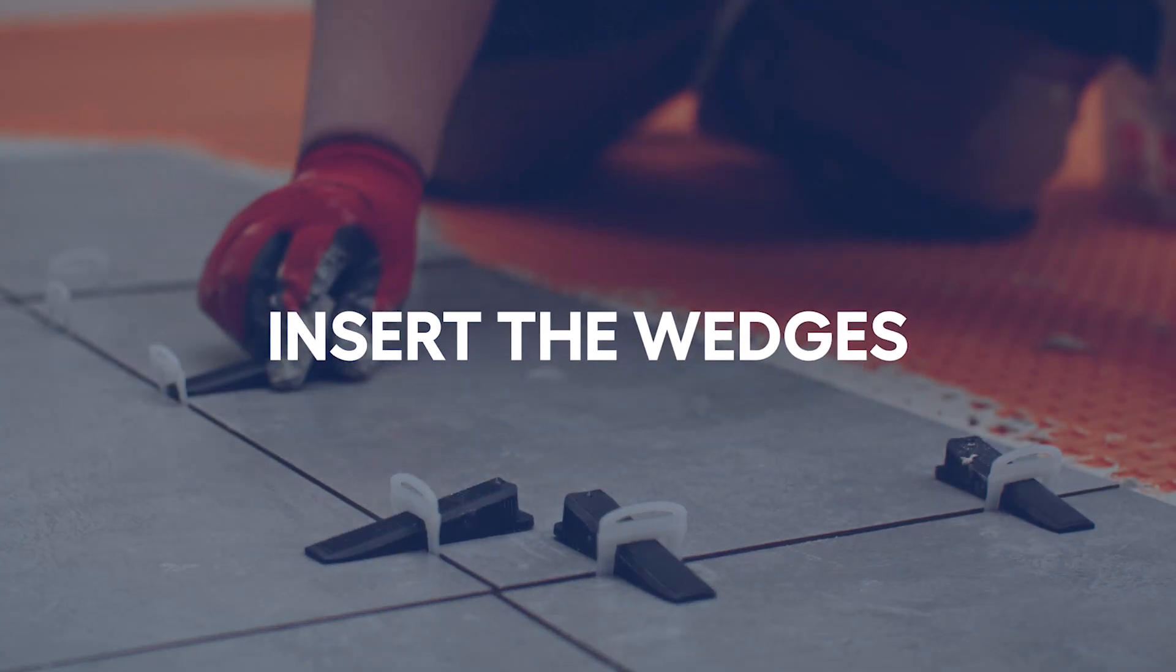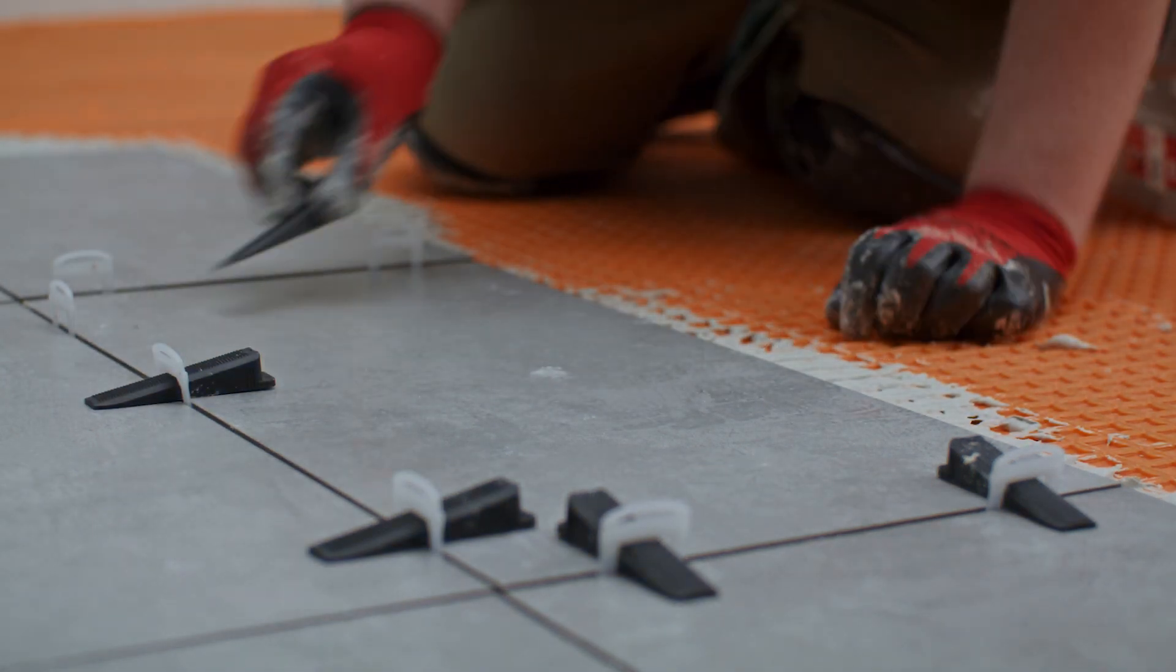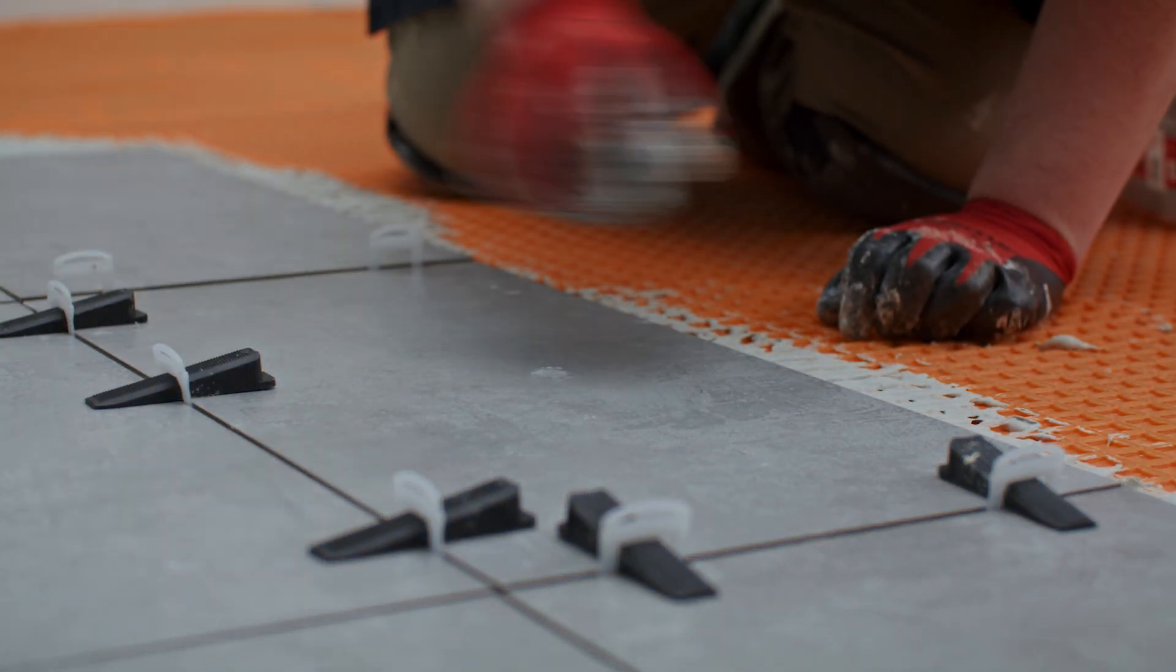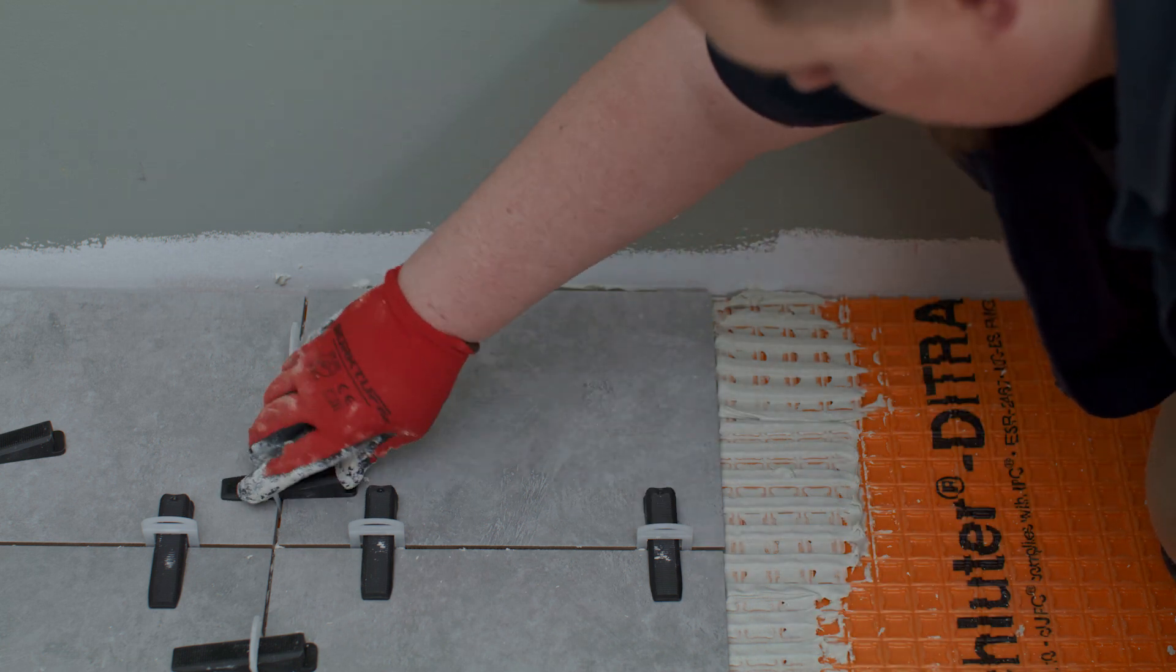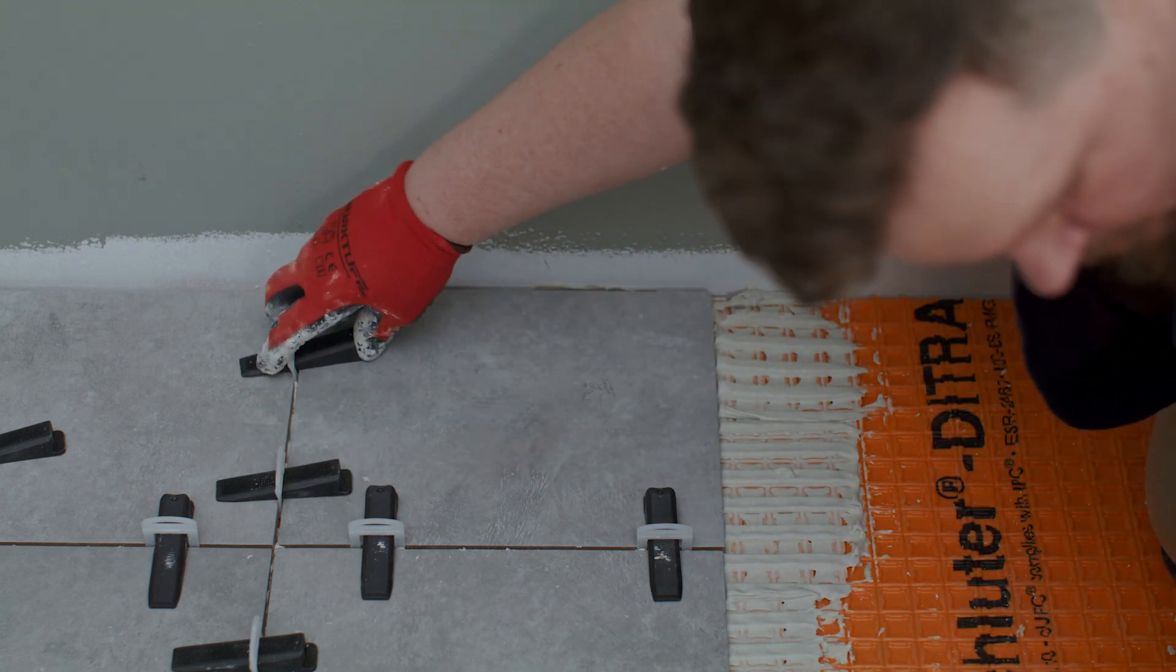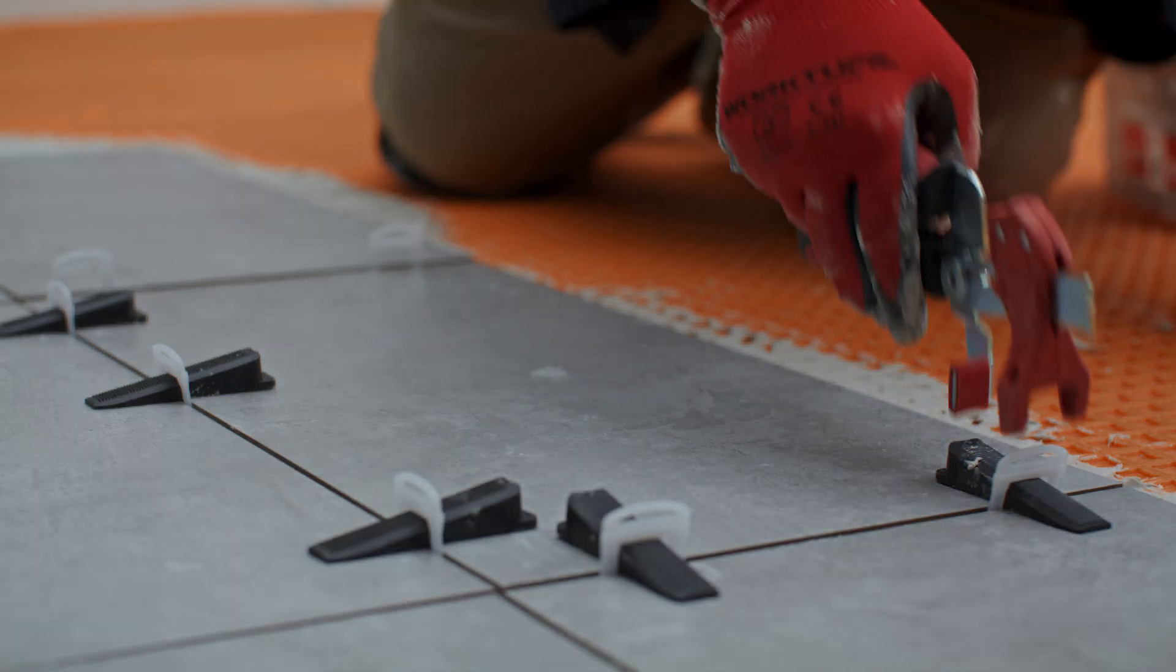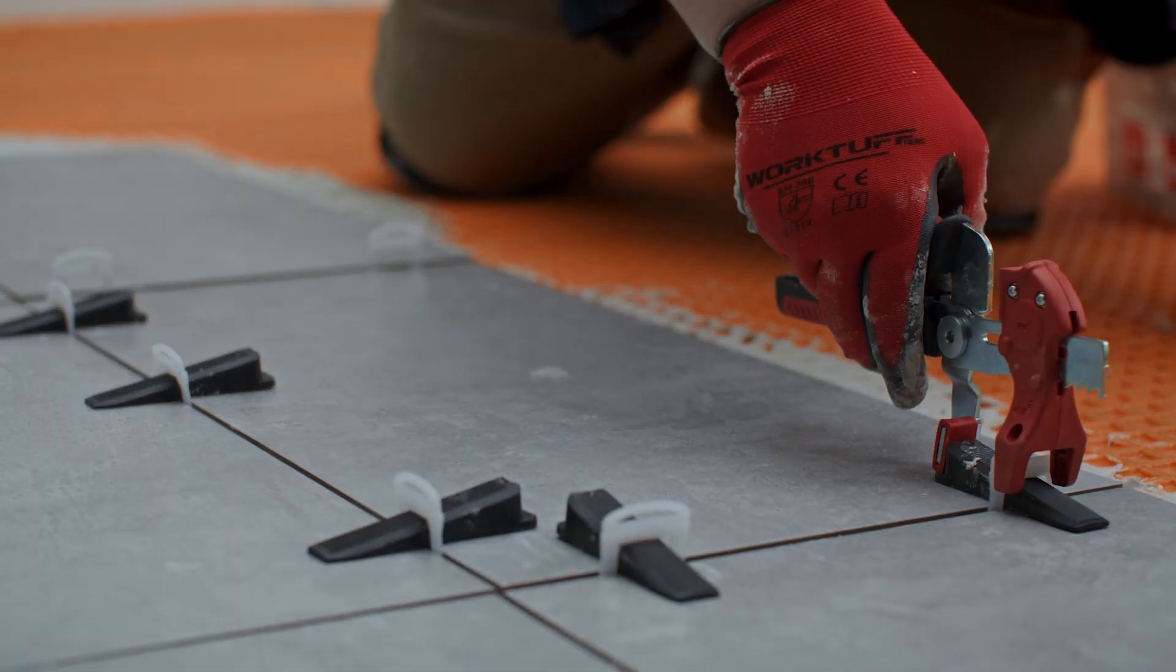Once you've placed two or three tiles, it's time to insert the wedges into the clips. Ensure your leveling system pliers are set to the correct length. Using your fingers, insert a wedge ever so gently into a clip. Grab your pliers to tighten until the tiles are even and aligned.